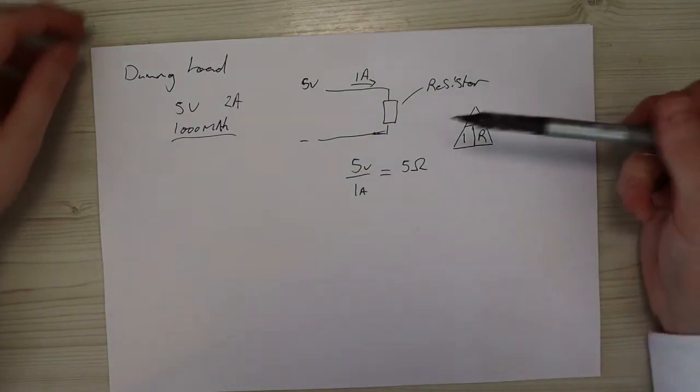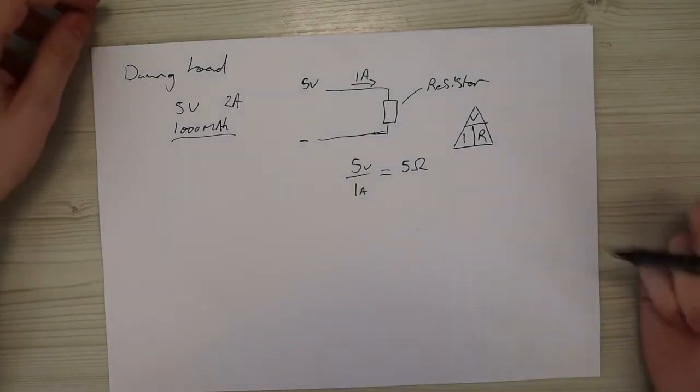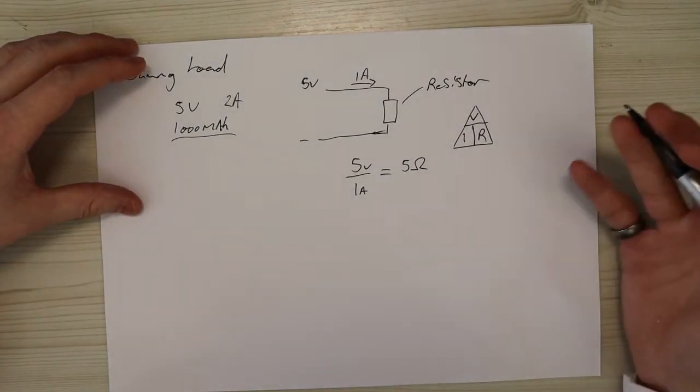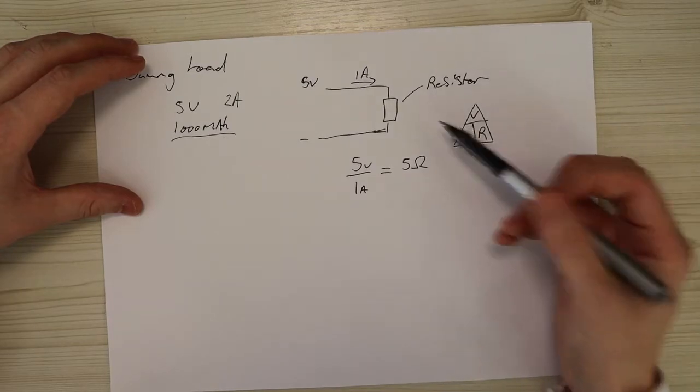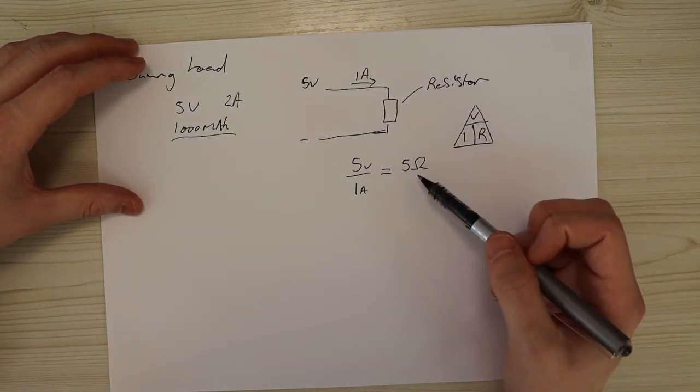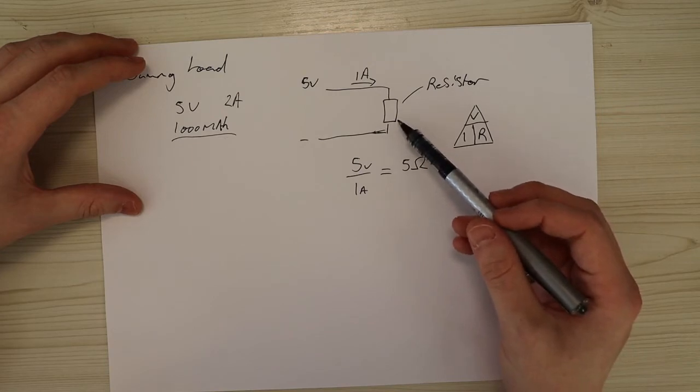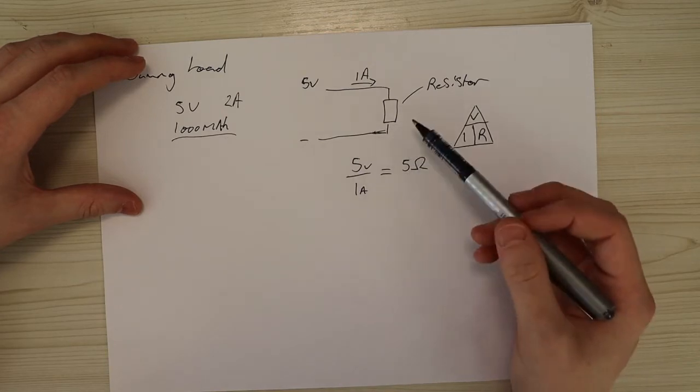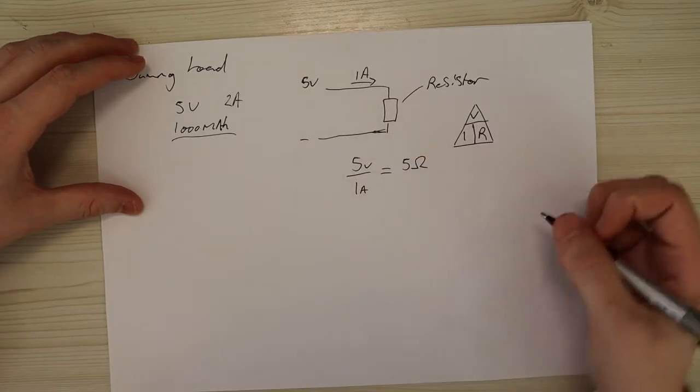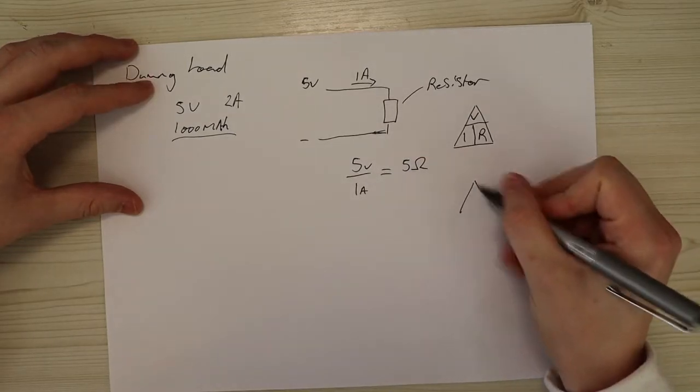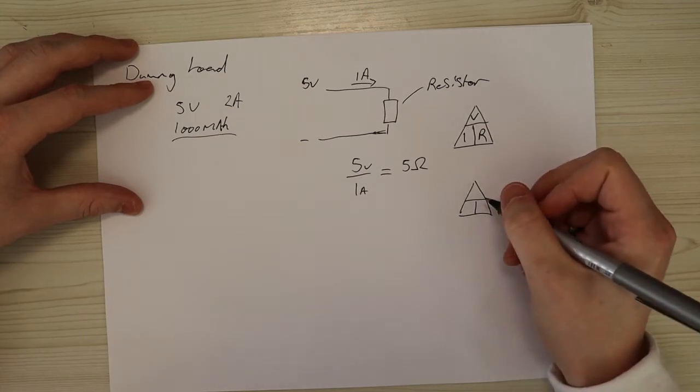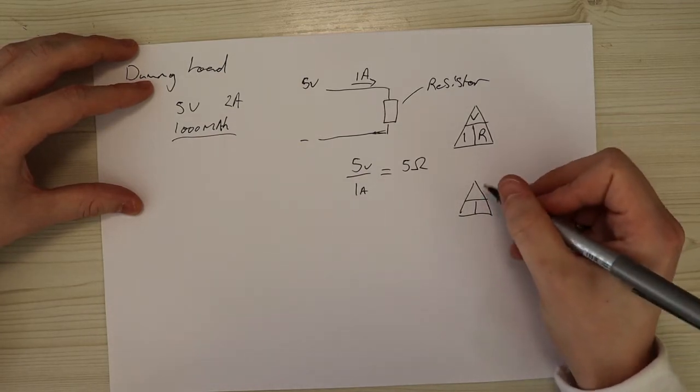When shopping for a resistor like this, you will see there's different power ratings as well. This is so you don't overheat it or break the resistor itself. So what you need to make sure you do is when you do buy a resistor, you get a power rating that's over the power you're expecting to use. So what's the power we're going to use from this?